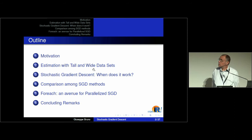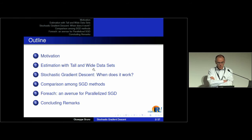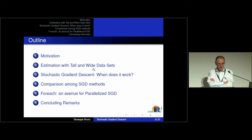Here is a short sketch of the talk. I will provide some motivation and explain when we want to make estimation with tall and wide datasets. I will say something about stochastic gradient descent and when it works — under which conditions it is useful to use this algorithm to speed up the optimization procedure. I will then compare different stochastic gradient descent methods and provide a possible avenue for parallelization on a single node with multi-core.